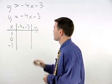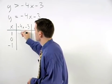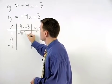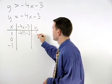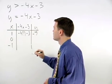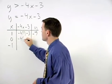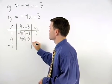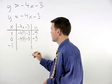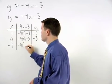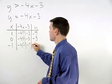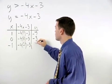We find that y equals negative 4 times 1 minus 3, or negative 7, negative 4 times 0 minus 3, or negative 3, and negative 4 times negative 1 minus 3, or positive 1.